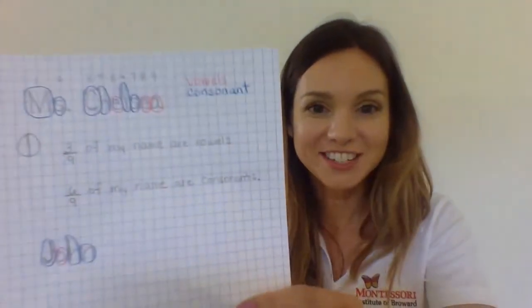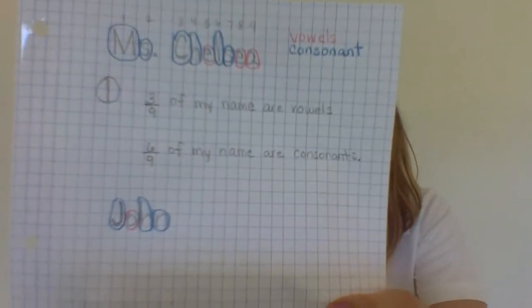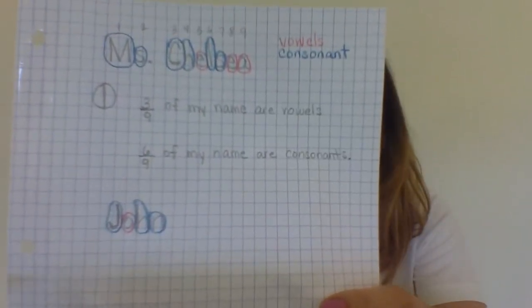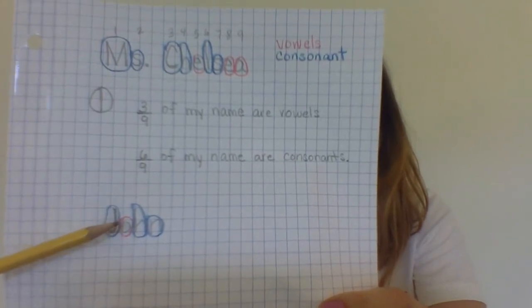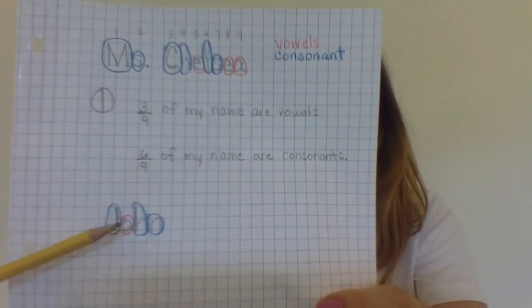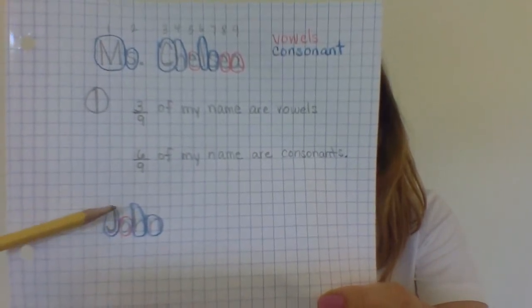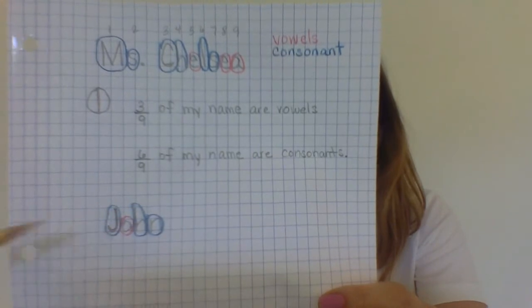Do you remember what to do next? Next we need to find out how many equal parts there are in this name: one, two, three, four. I could divide this name up into four equal parts. Do you know what we do with that number — the number of equal parts? It becomes our denominator.